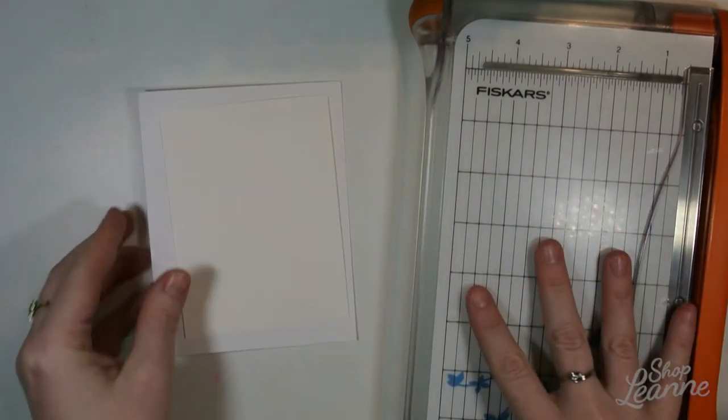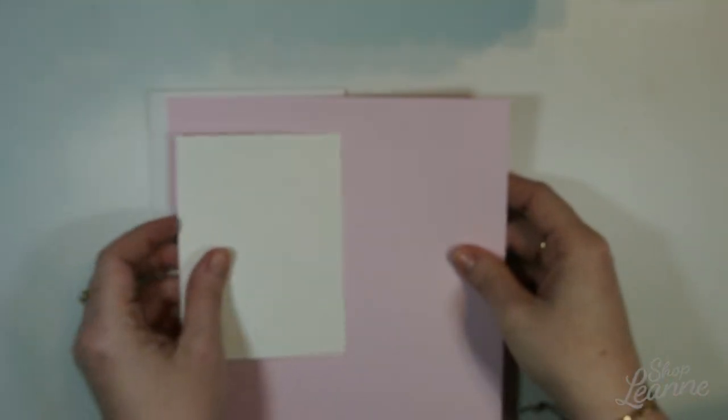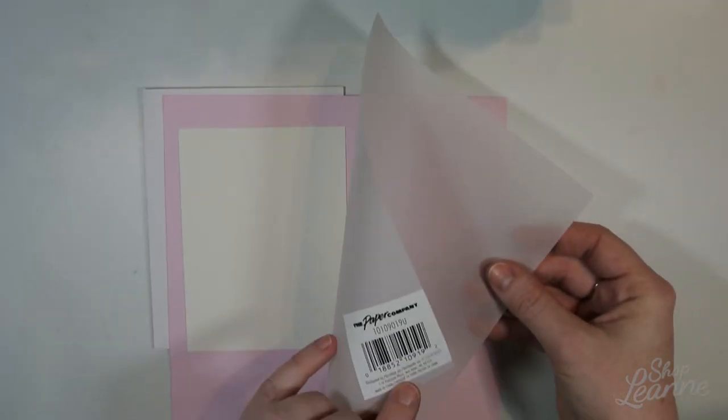I'm just going to use my Fiskars paper trimmer to trim up some of the background. I have some pink linen cardstock here that I picked up at Michael's to cover the background with, and I also have some vellum that I'm going to use for the sentiment.